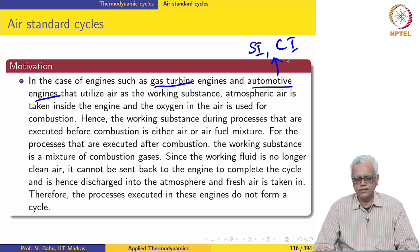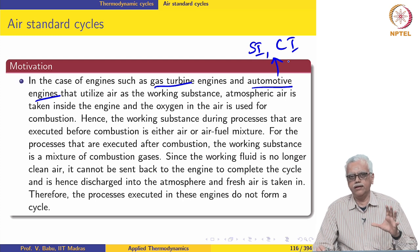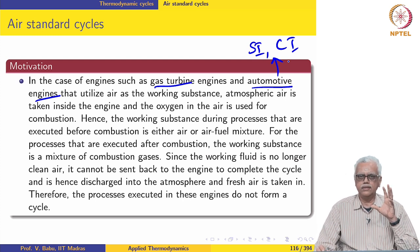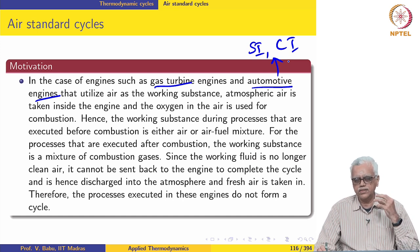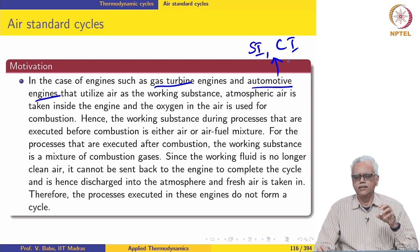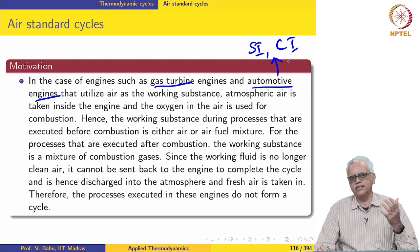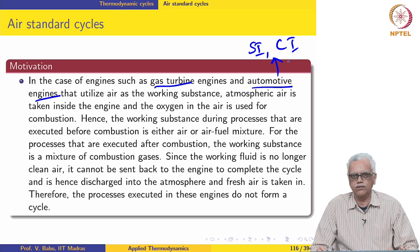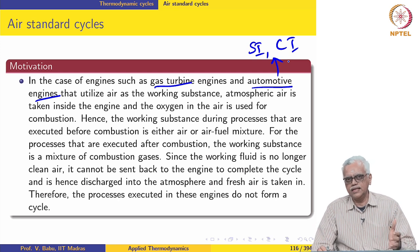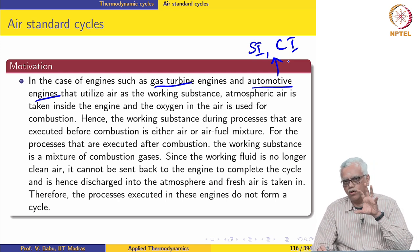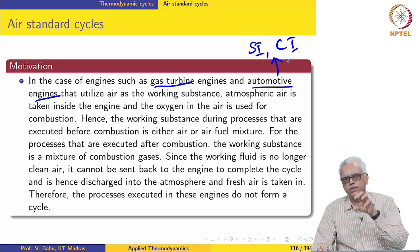In all these three engines, atmospheric air is taken in as the working substance. After it undergoes compression, fuel is then added to the air stream. In some cases, air is taken in, fuel is mixed and then it undergoes compression. Atmospheric air is taken in as the working substance, fuel is added to the atmospheric air, and the oxygen in the air is used for the combustion of the fuel.